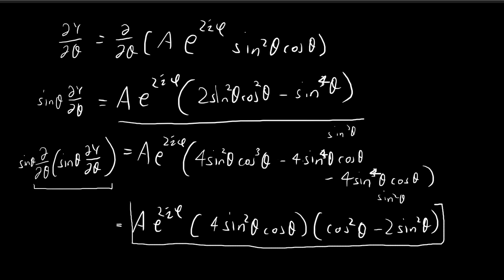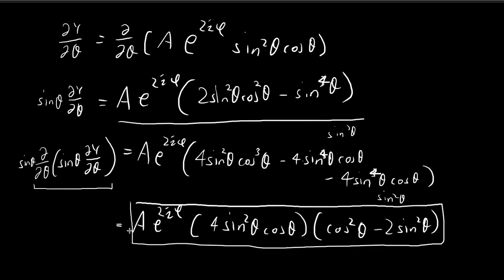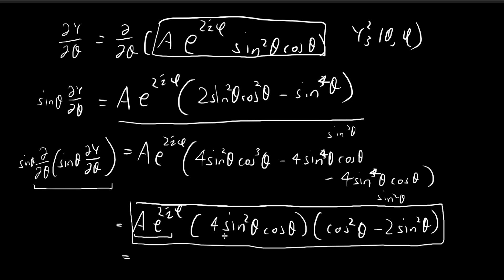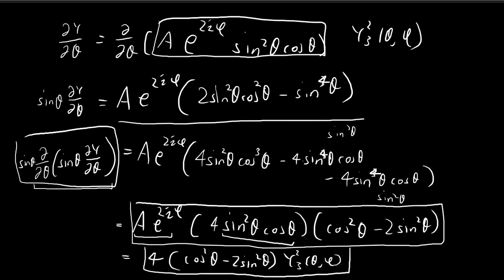This expression is the left-hand side of this differential equation. We can simplify further by noting that this expression here is our Y₂³(θ,φ). Combining the sine squared and cosine terms, we can express the whole thing as 4 times (cosine squared theta minus 2 sine squared theta) times Y₂³(θ,φ). Expressing the answer this way will be helpful later on.